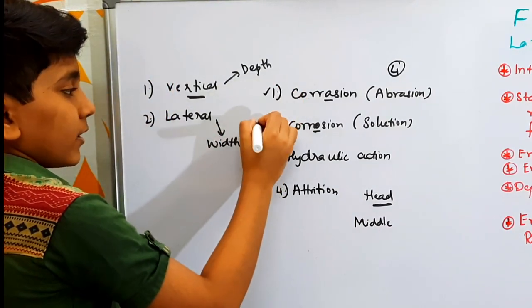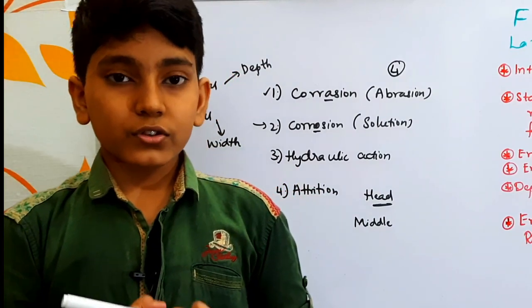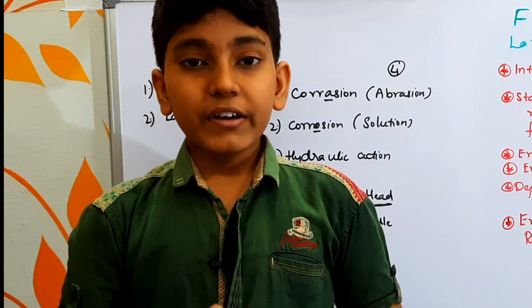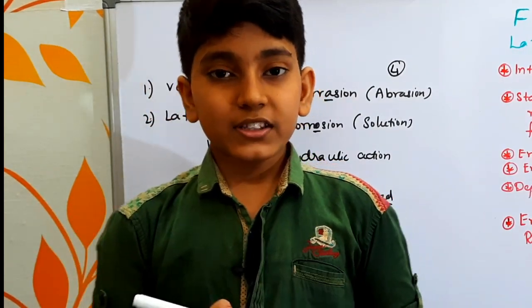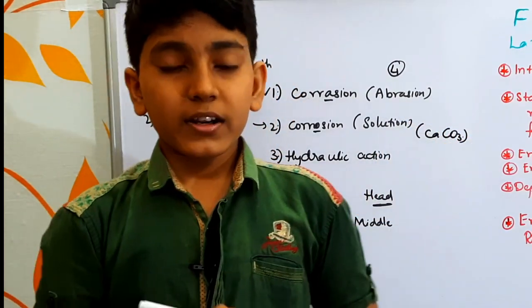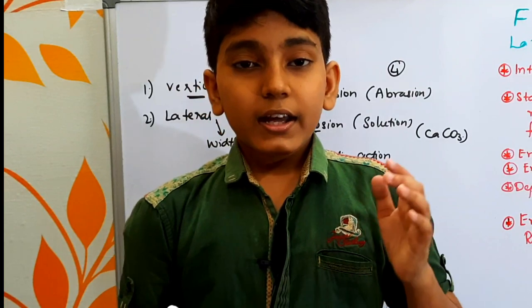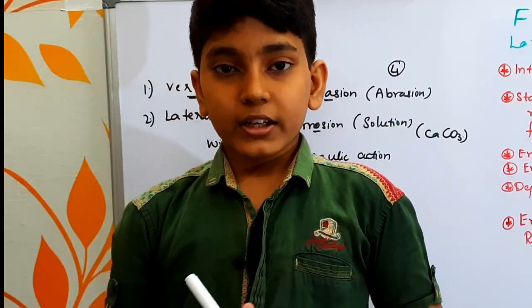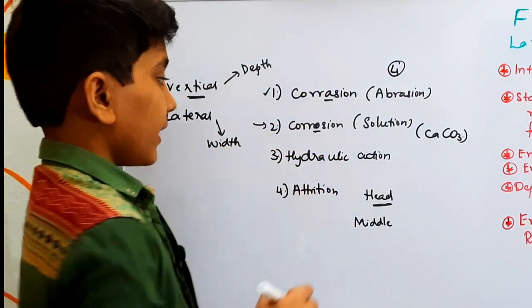The second erosion process is corrosion, also called solution. In this process, rocks that are easily soluble in water — such as CaCO3, limestone, and marble — found at the riverbeds become weak, and when strong water moves over them they are weathered and eroded away.